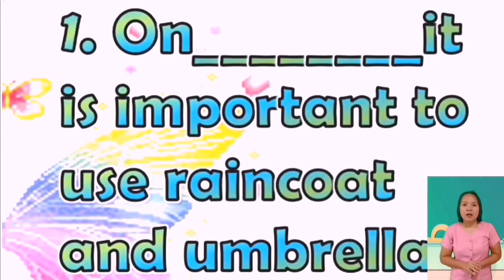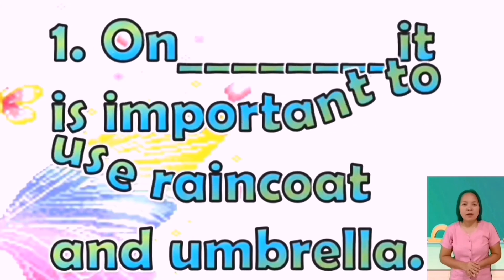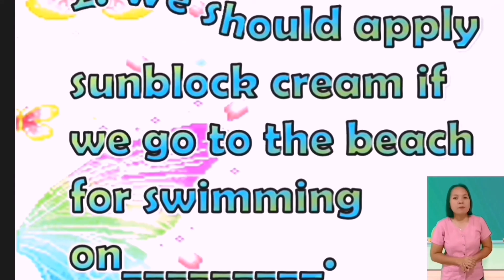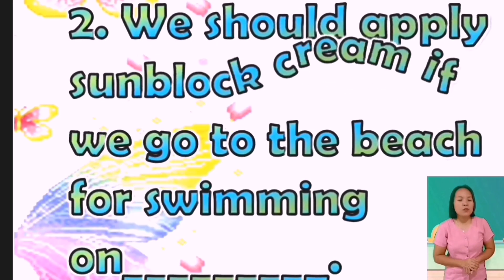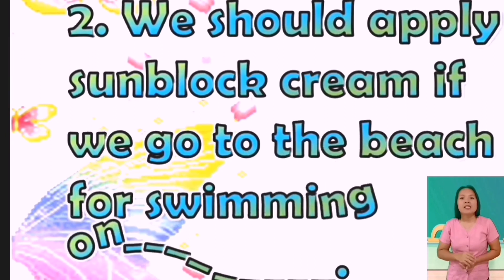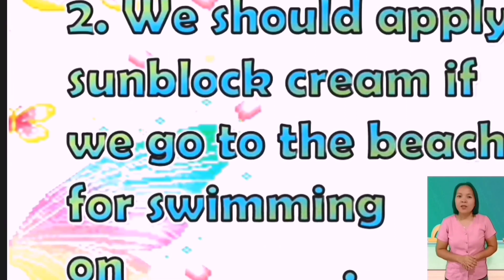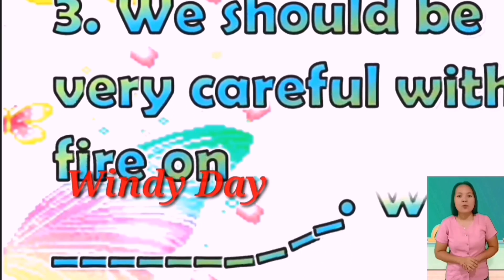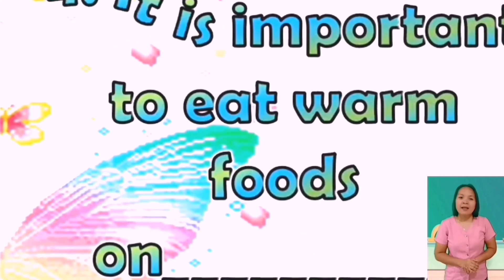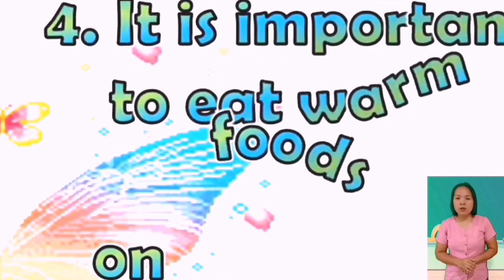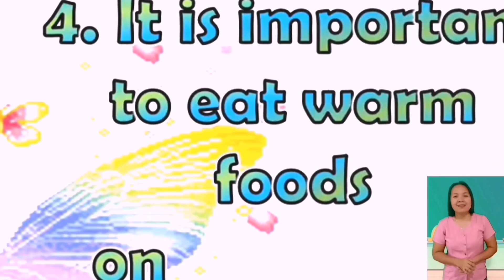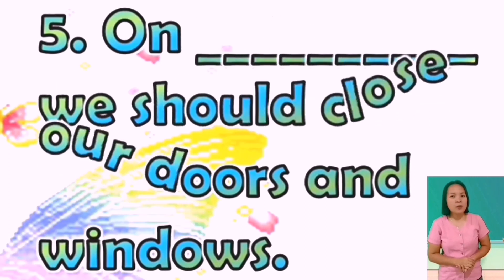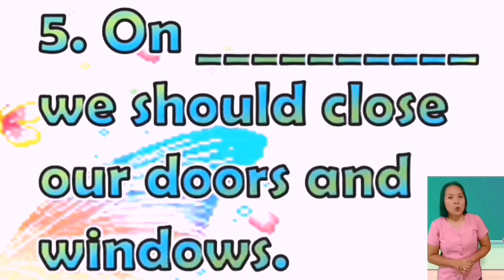Number one: on blank, it is important to use a raincoat and umbrella. Correct — rainy day. Number two: we should apply sunblock cream if we go to the beach for swimming on blank. That is right — sunny day. Number three: we should be very careful with fire on blank. That's right — winter day. Number four: it is important to eat warm food on blank. Correct — rainy day. Number five: on blank, we should close our doors and windows. Correct — winter day.